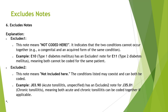Next, coming to the very important Excludes 1 and Excludes 2 notes. If you are a fresher or beginner, you should know these because they are frequently asked in interviews, and when you start coding, these notes are critical for proper coding. Excludes 1 means 'not coded here' — it indicates that two conditions cannot occur together.